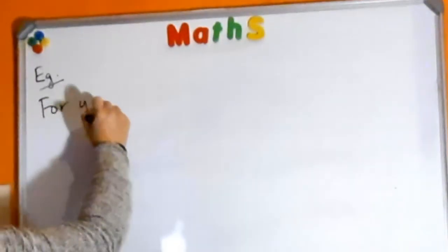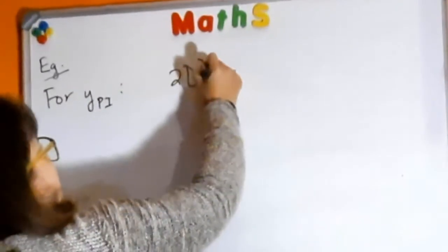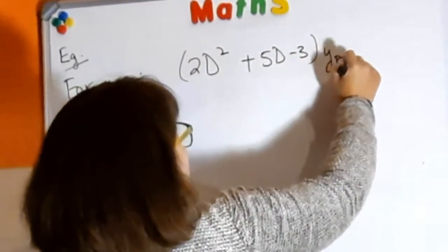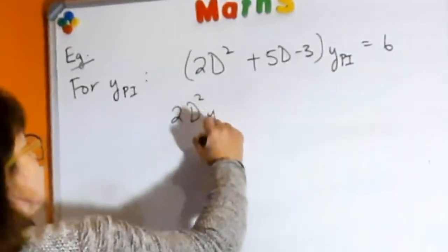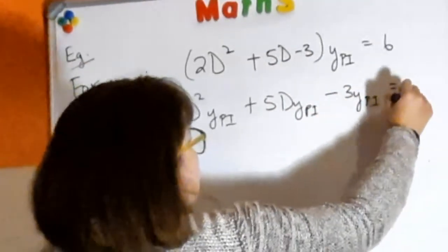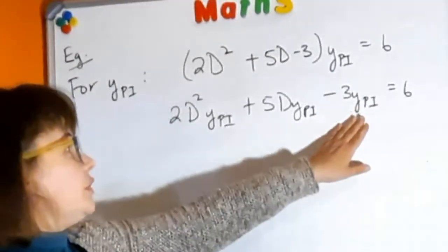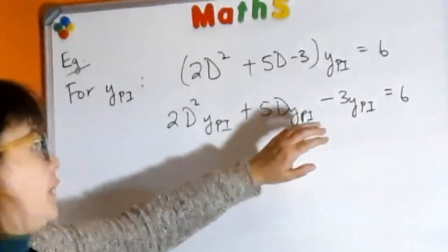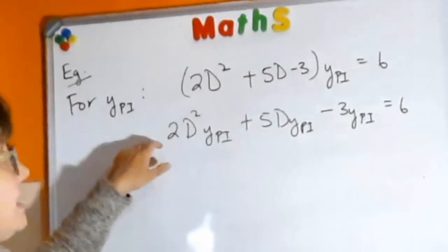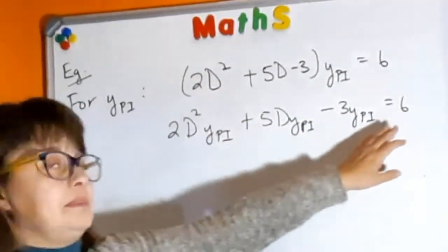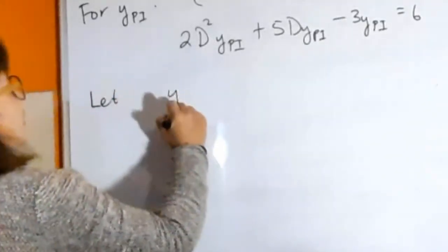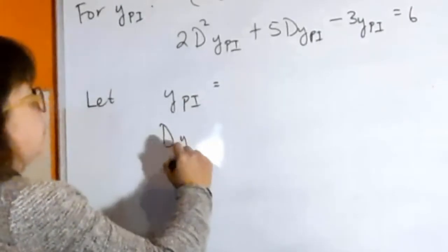For the particular integral, you are working with this part. We now have to find an expression for ypi — your particular integral — such that if you find the first derivative and the second derivative and substitute them into this equation, the left hand side equals six. If it doesn't equal six, you've got the wrong function.